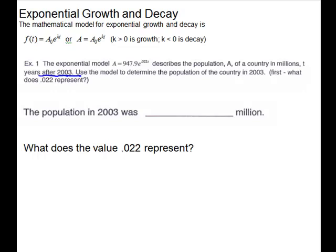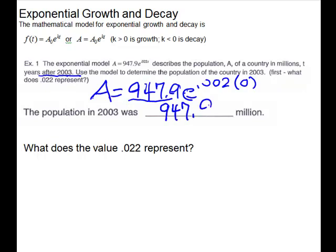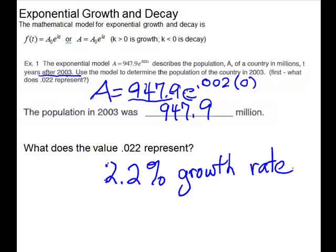So we have A equals 947.9 e to the .022 times 0. So 0.022 times 0 is 0, e to the 0 is 1, so our answer is going to be 947.9 million. The .022 represents 2.2 percent, so we move the decimal two places to the right to get the percent symbol - the growth rate.